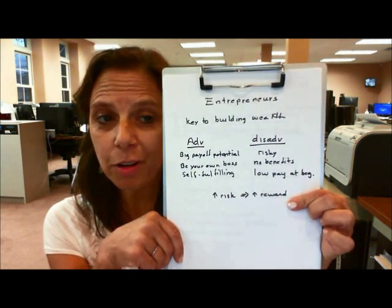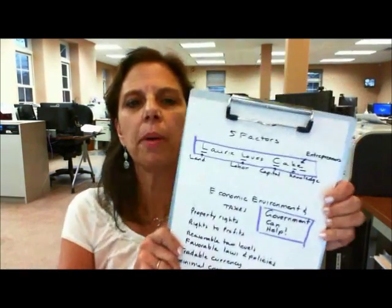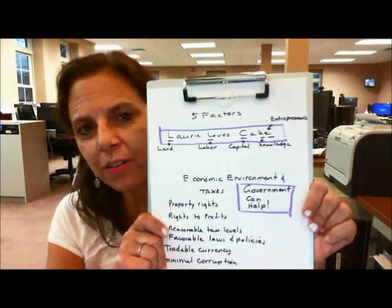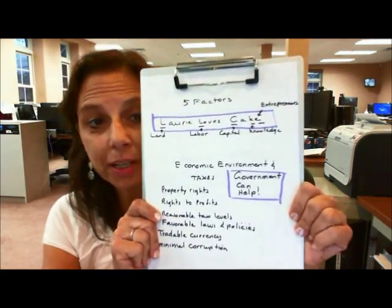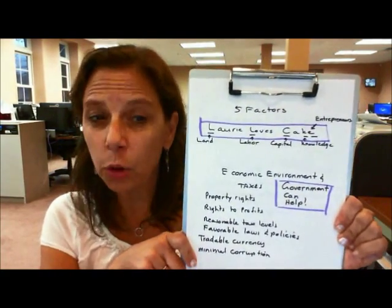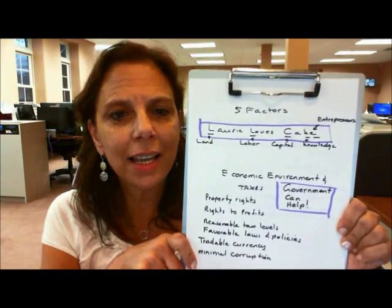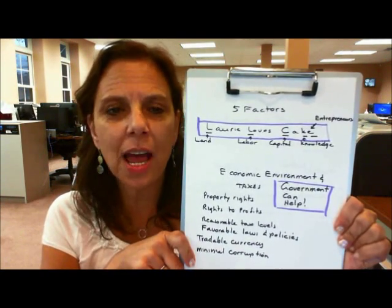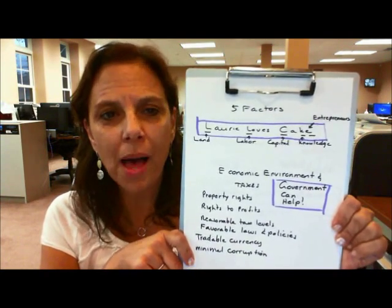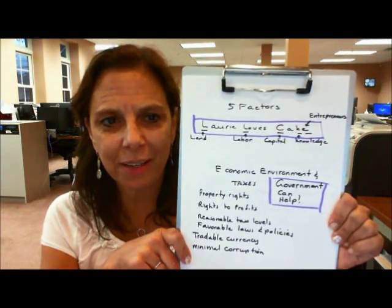Most entrepreneurs are looking for the big hit. The next question was, how does technology affect business? But before we get to that, let's talk about the five factors of productivity. I made up a little saying that should help you remember it: 'Lori loves cake' — land, labor, capital, entrepreneurs, and knowledge combine to create productivity.